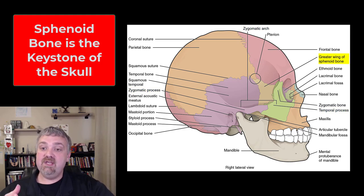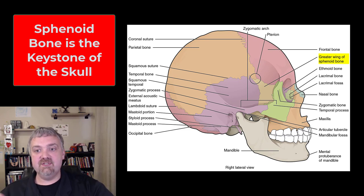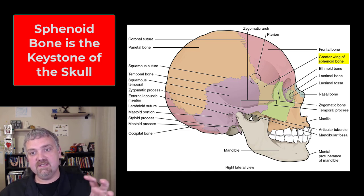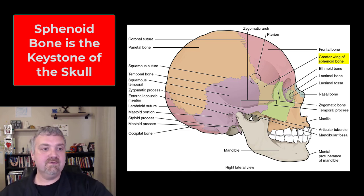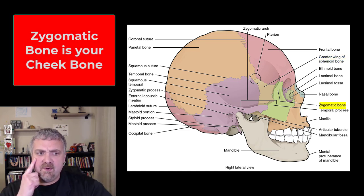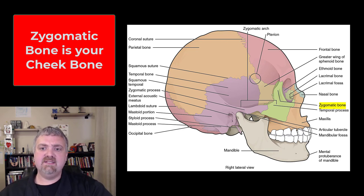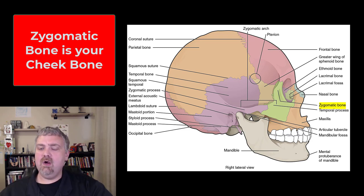Then we have the sphenoid bone. You can see it a lot better when you pop the top off of the skull, but the sphenoid bone is there on the outside. The sphenoid bone is called the keystone of your skull because it connects to all the other critical bones. The zygomatic bone — your cheekbone — and the only prominence there would be that temporal process of the zygomatic bone that makes up part of your zygomatic arch.